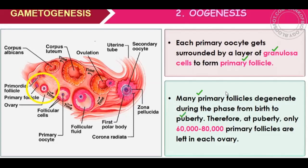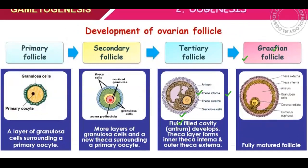Many primary follicles degenerate during the phase from birth to puberty. At puberty, many primary follicles degenerate. How many remain at puberty? In each ovary, 60,000 to 80,000 remain out of 120,000 to 160,000.